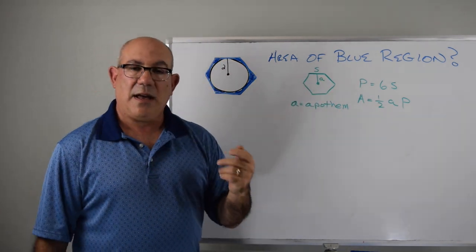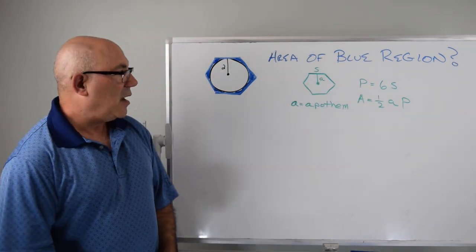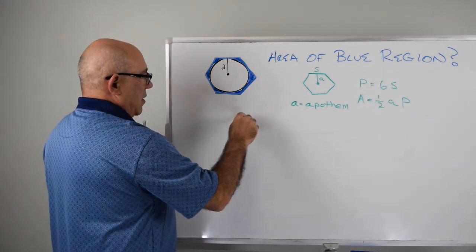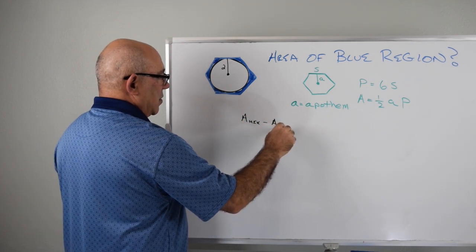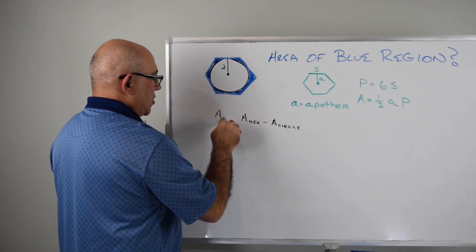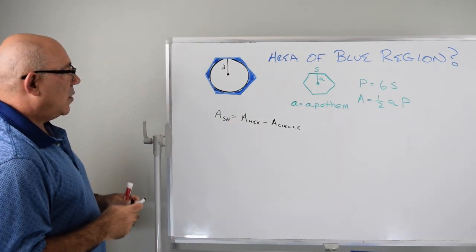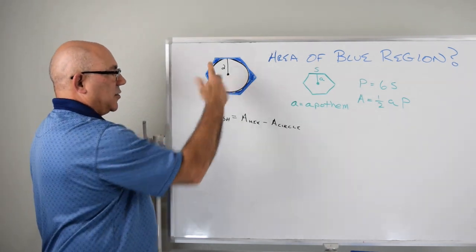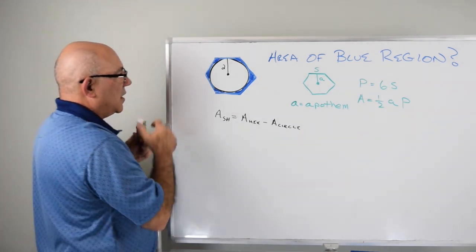In this case we have a hexagon, so the perimeter is going to be six times s. What we have to do is find the area of the hexagon, subtract the area of the circle, and that will give us the area of the shaded region. The area of the circle is pi r squared — that's easy — but the area of the hexagon is going to be a little tricky.